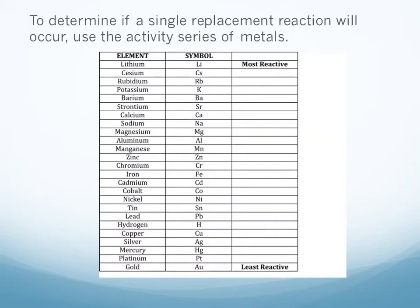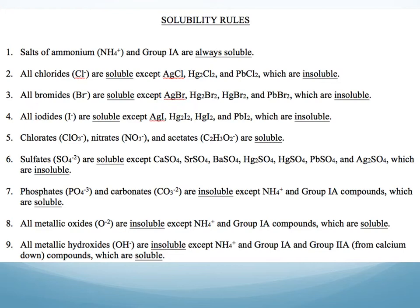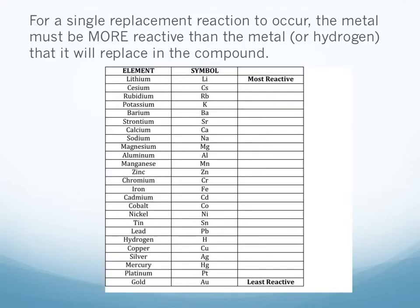To determine if we're going to have a single replacement reaction, we're going to use the activity series of metals. If you don't have this reference sheet available, please go get it now. We will not be using the solubility rules that we have used previously for double replacement reactions. The solubility rules are for double replacement reactions only. The activity series is for single replacement reactions only. We are going to look up the metal element in our reactants.